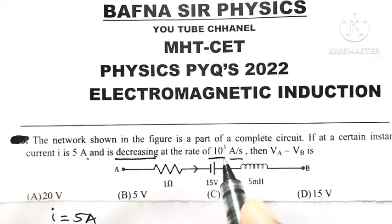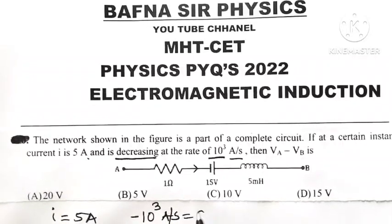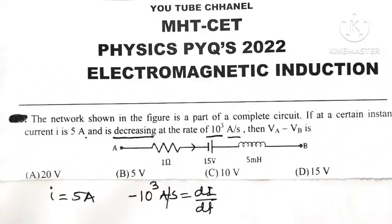Decreasing at the rate of 10³ ampere per second means -10³ ampere per second. It is the rate of change of current. And because current is decreasing, that is why it is taken with negative sign.